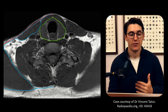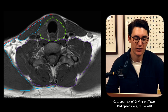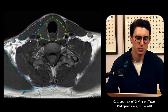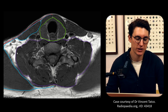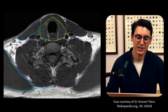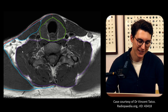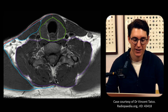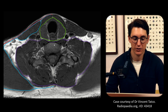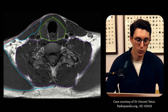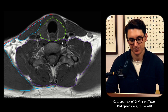Our last fascial plane is our deep layer of our deep cervical fascia. In textbooks you might hear this called the prevertebral fascia, but as radiologists we call it the deep layer of our deep cervical fascia. You can see it encases the paravertebral muscles, the vertebral column itself, and the spinal cord — all of this is our deep layer of our deep cervical fascia.